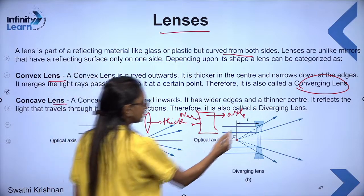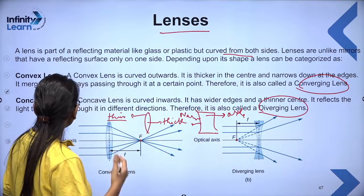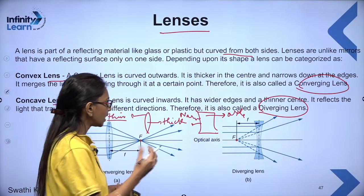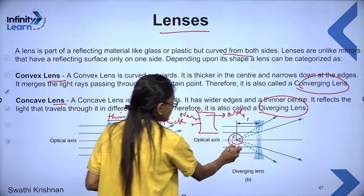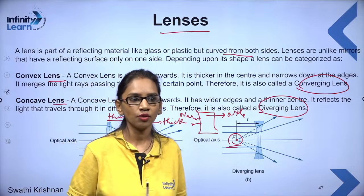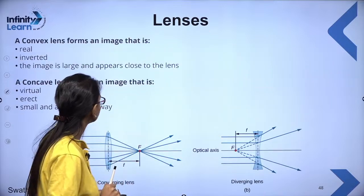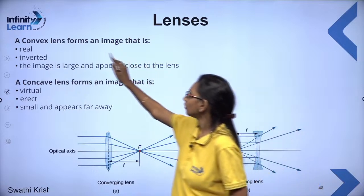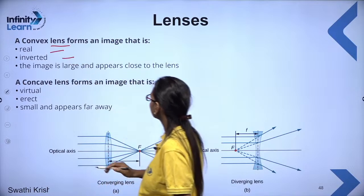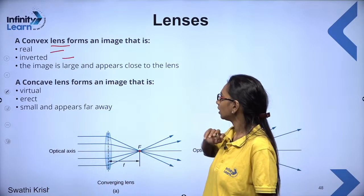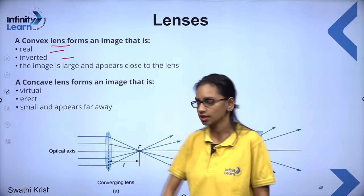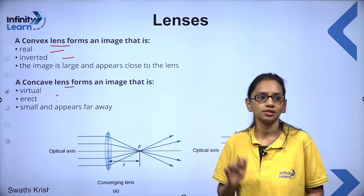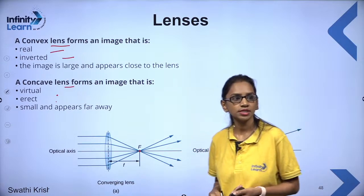Coming back to lenses: the concave lens is a diverging lens. The image formed by a convex lens is real, inverted, and large — appearing closer to the lens. The concave lens forms a virtual, erect, and small image that appears farther away. These are the image formations by both concave and convex lenses.